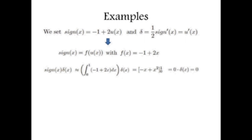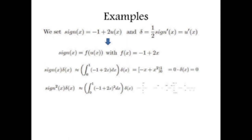Note that this product, although it can be associated to the zero function in D-prime, is a very different distribution: if we multiply it by another distribution, in general we get a result different from zero. For example, if we multiply again by sgn(x), we get sgn²(x) times delta. Now sgn²(x) is a function equal to 1 everywhere except at 0, so it can be associated to the constant function 1 in D-prime. Projecting this product into D-prime using our formula gives a delta of amplitude 1/3.